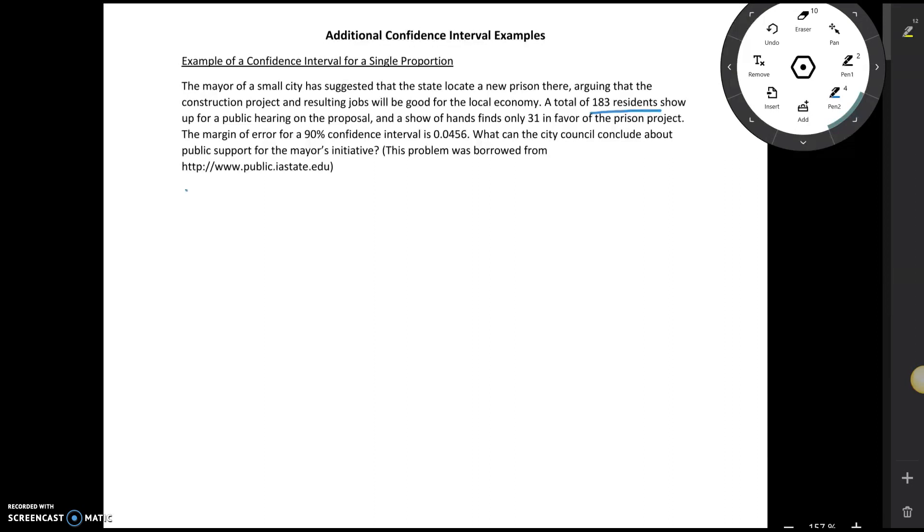For each of these problems, the first thing we're going to do is check the sample size. When we work with a single proportion, one of the ways that we can check the sample size requirement is to see if there's more than 10 people in each group or in each category.